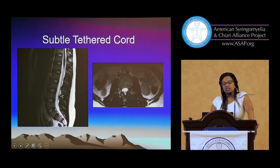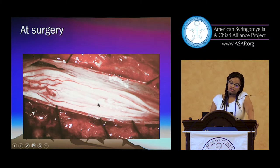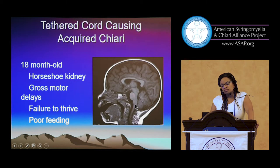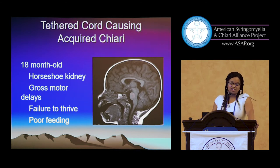At surgery, I had already opened the dura. His filum was pulled very straight within the canal compared to the other nerve roots, and the structure — the end of the spinal cord, the filum — was stuck to the dura. All of his symptoms resolved. His sleep apnea resolved. Because he was getting sleep, he was no longer sick all the time and was back to getting straight A's. He's in college now — a neuroscience major who wants to be a neurosurgeon, which makes me very happy.